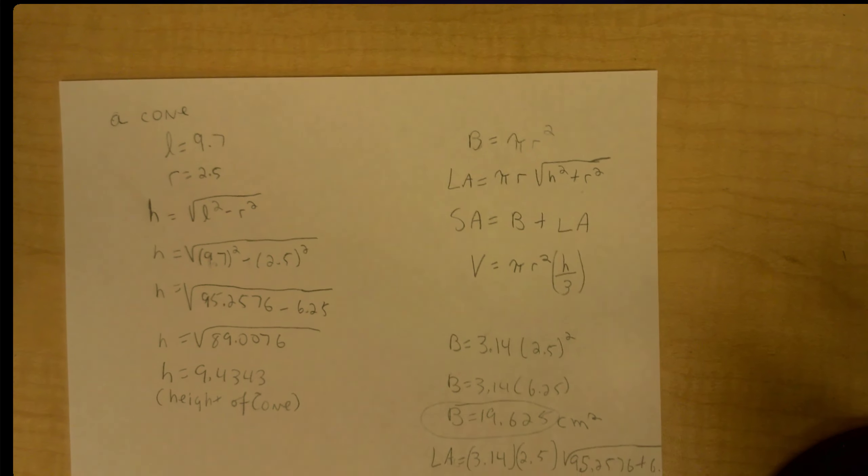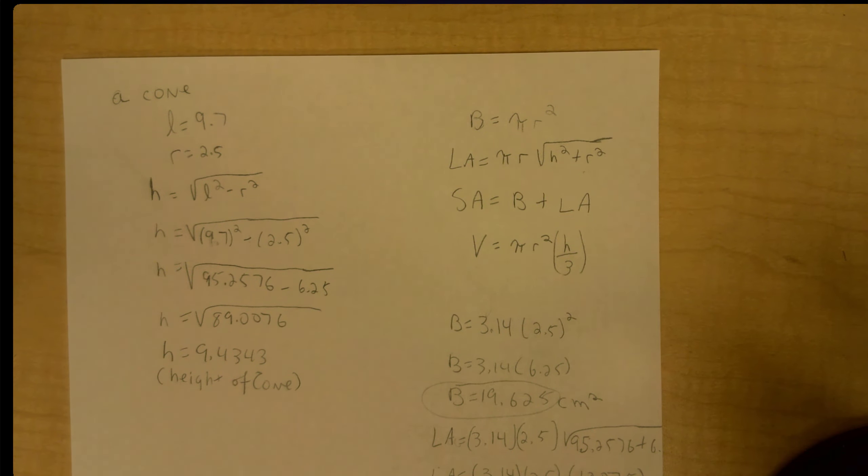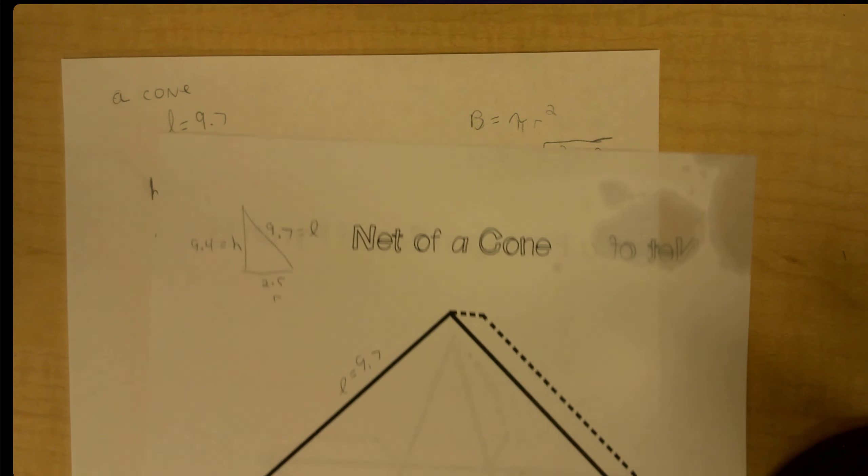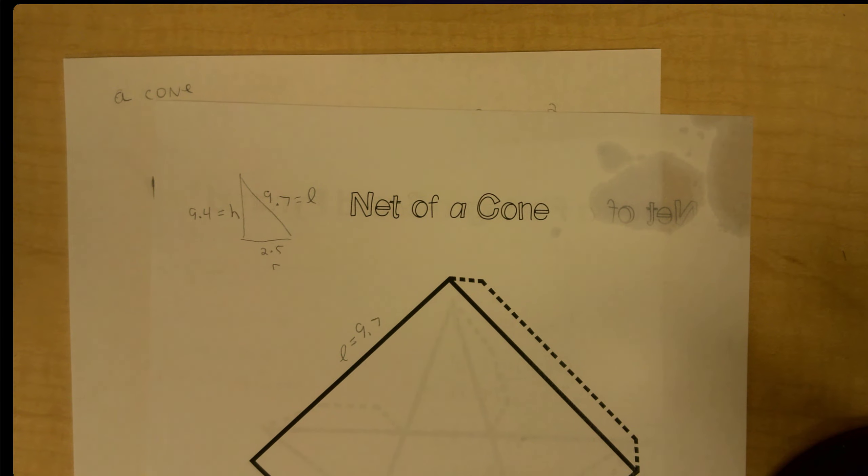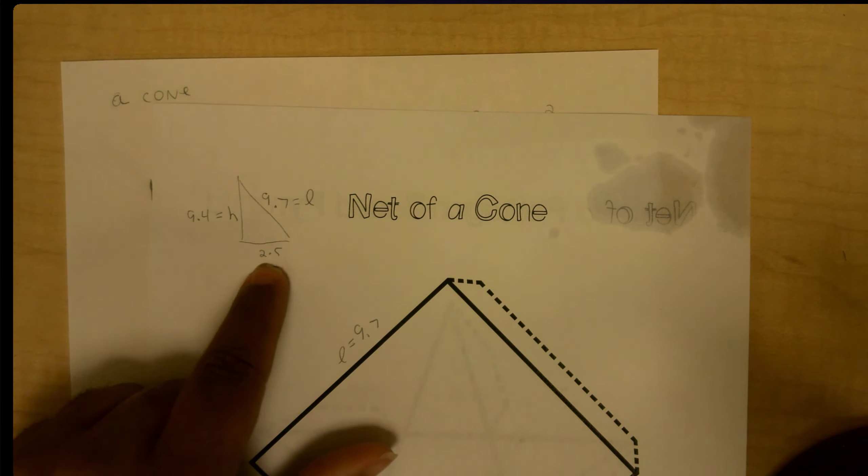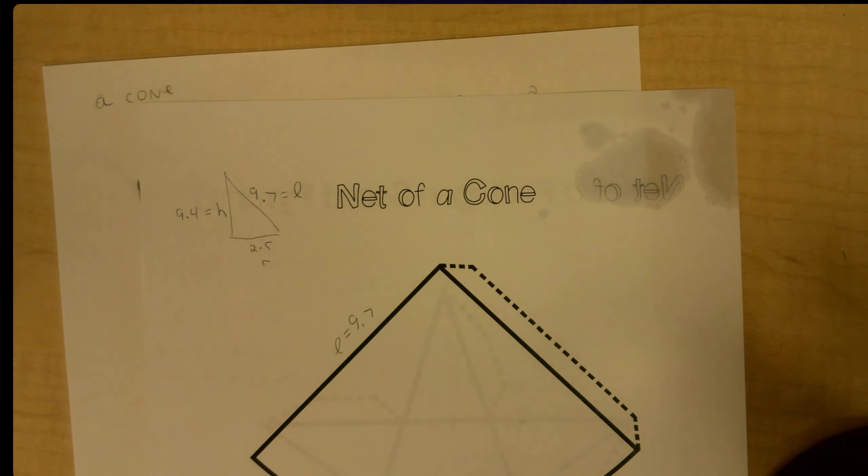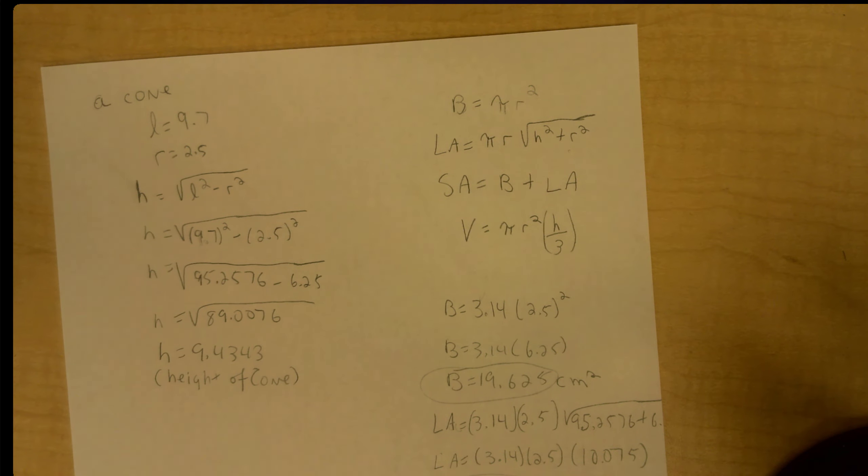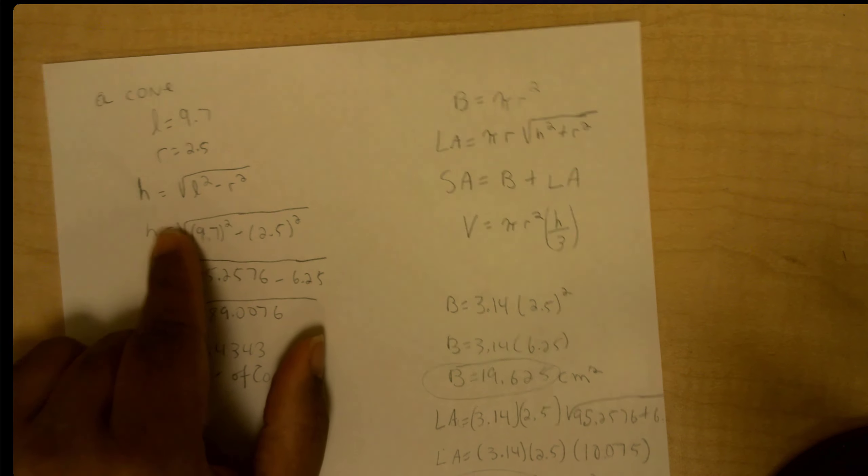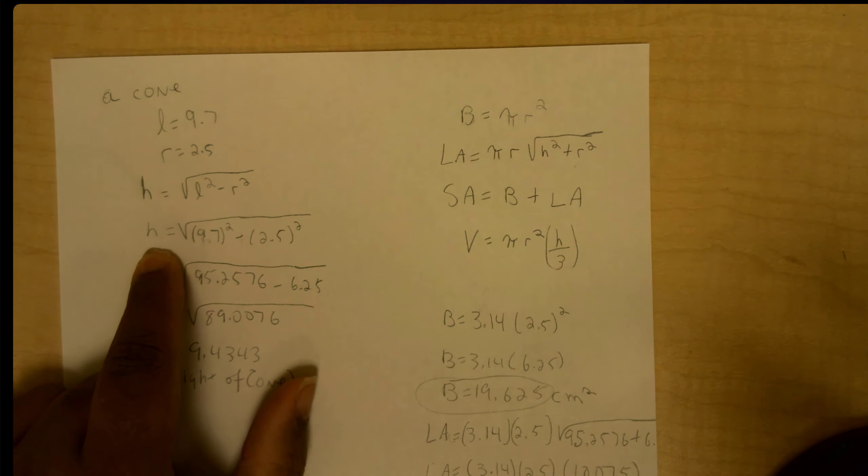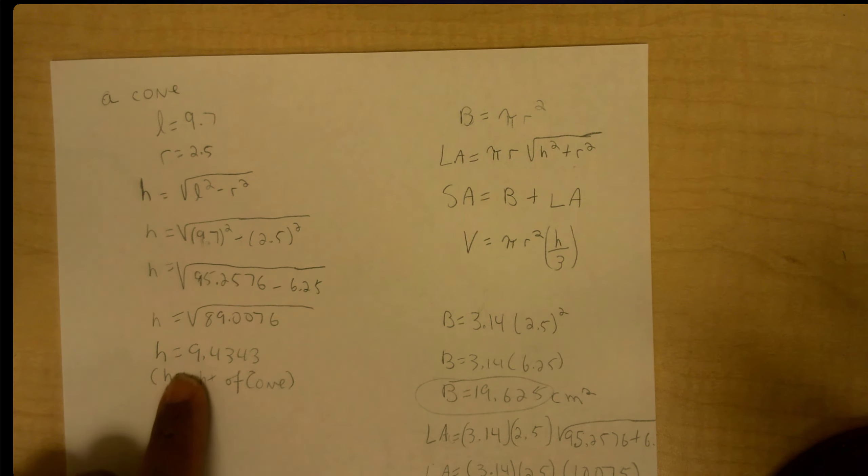So I used Pythagorean's theorem here to find the height of that cone. I knew this edge, I knew this edge, I needed to find this edge. So I subtracted what I knew and solved for what I didn't know. Then I found that the height of the cone to be 9.4343 for the height of the cone.